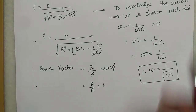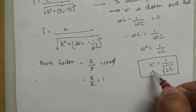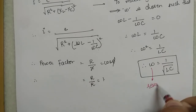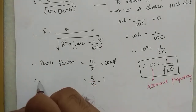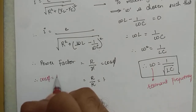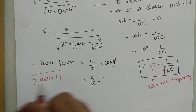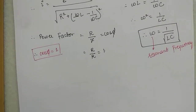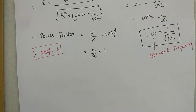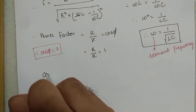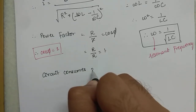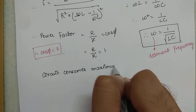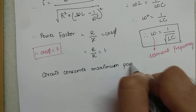At this frequency — which we call the resonant frequency — the power factor equals 1, meaning cos φ = 1. When cos φ equals 1, the circuit consumes maximum power during a cycle.